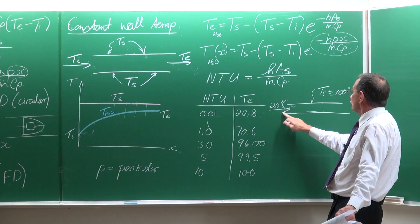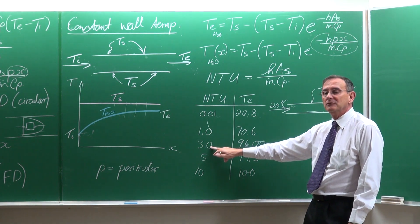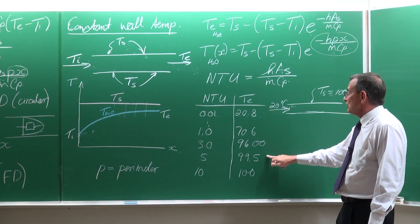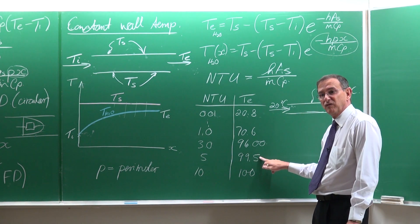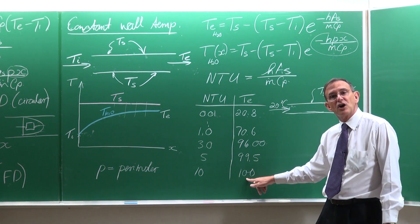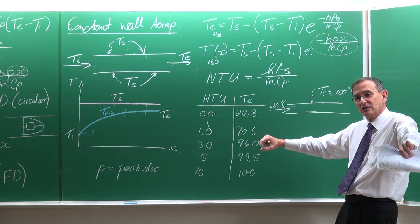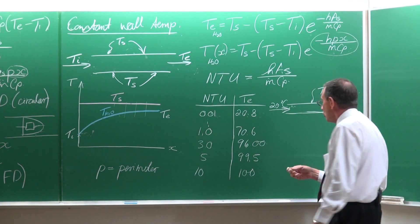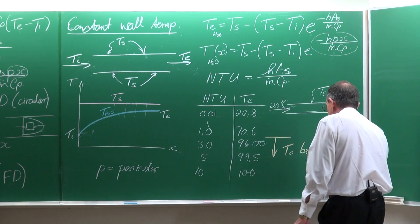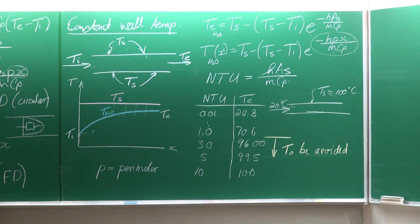What conclusion can you make from this? With water coming in at 20 and wall temperature at 100: if the NTUs are 3, you are within 4 degrees of the wall. If NTUs is 5, the temperature is 99.5 — almost the surface temperature. But from NTUs of 5 to 10, the temperature only increases 0.5 degrees, yet you've doubled the length of the heat exchanger. So as a rule of thumb, if you design a heat exchanger and the NTUs start becoming 3 and higher, then you start wasting material.